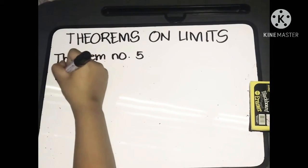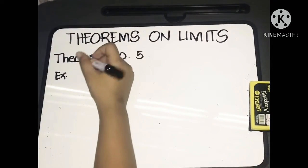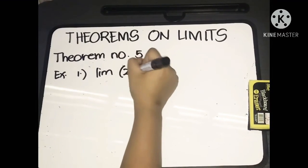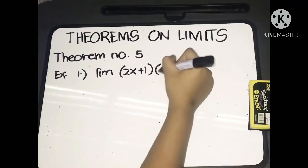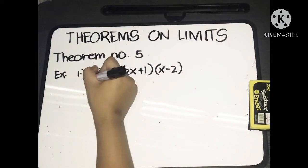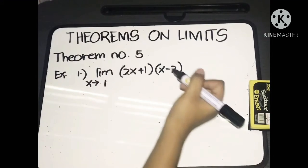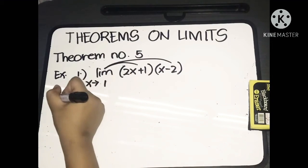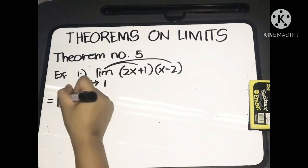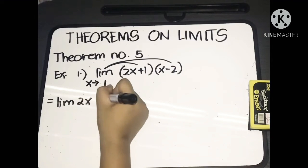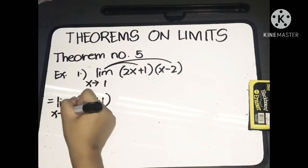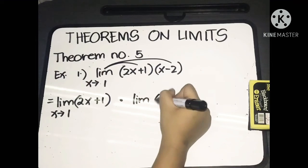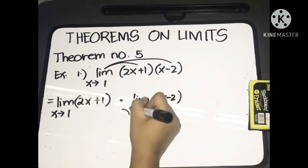Let's have this example: the limit of (2x + 1) multiplied by (x − 2) as x approaches 1. We distribute the limit over multiplication, so we'll have the limit of (2x + 1) as x approaches 1, multiplied by the limit of (x − 2) as x approaches 1.